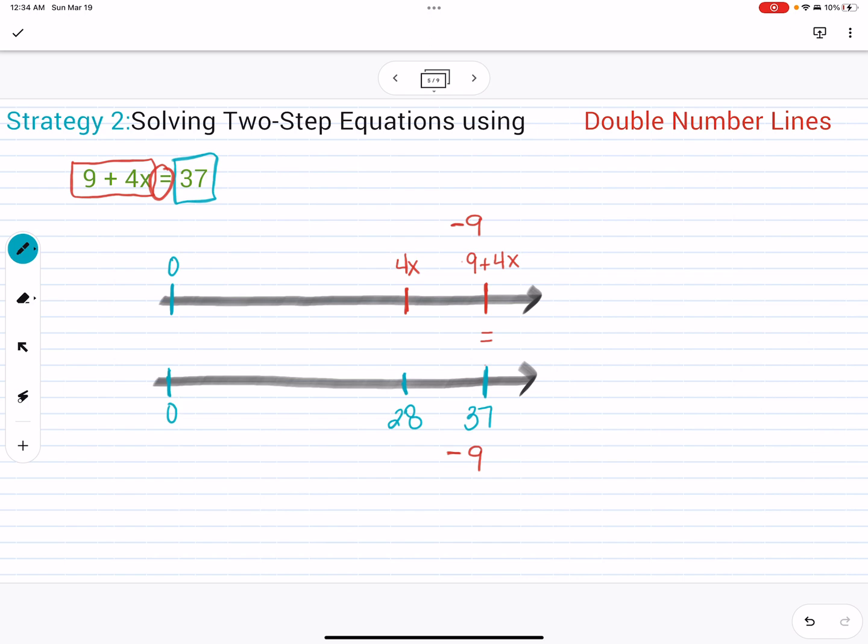Now, using my double number line, we know that four X equals 28. This is where it could get a little tricky. I have four X, which I know, as we reviewed last time, four X is the same thing as saying X plus X plus X plus X. So I am breaking it down into four pieces.